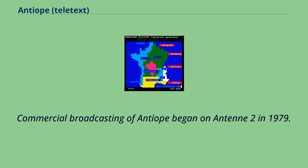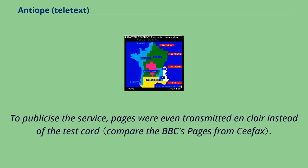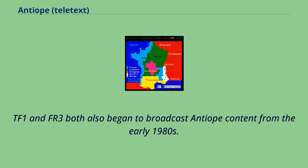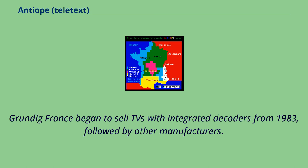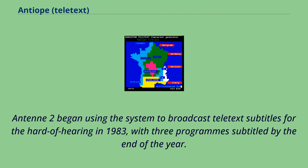Commercial broadcasting of Antiope began on Antenne 2 in 1979. To publicize the service, pages were even transmitted in clear instead of the test card. TF1 and FR3 both also began to broadcast Antiope content from the early 1980s. Antiope decoding was initially by set-top boxes connected to the television by a SCART cable. Grundig France began to sell TVs with integrated decoders from 1983, followed by other manufacturers. Antenne 2 began using the system to broadcast teletext subtitles for the hard-of-hearing in 1983, with three programs subtitled by the end of the year.